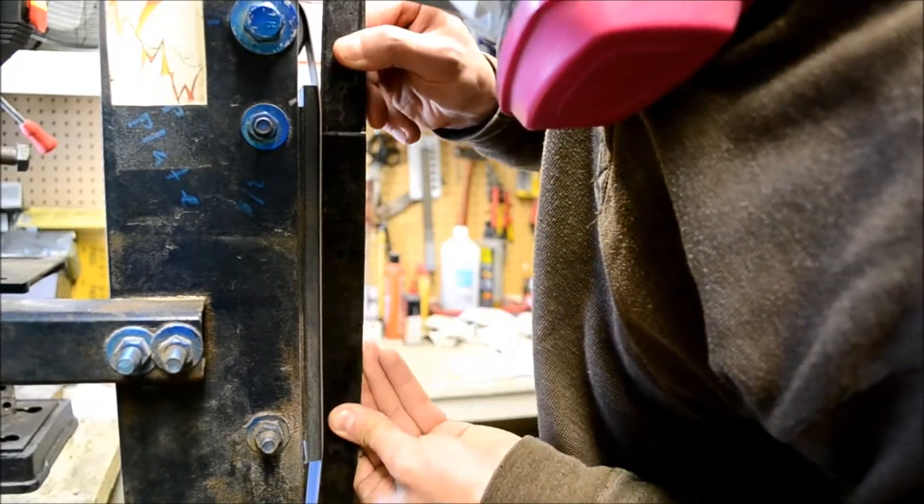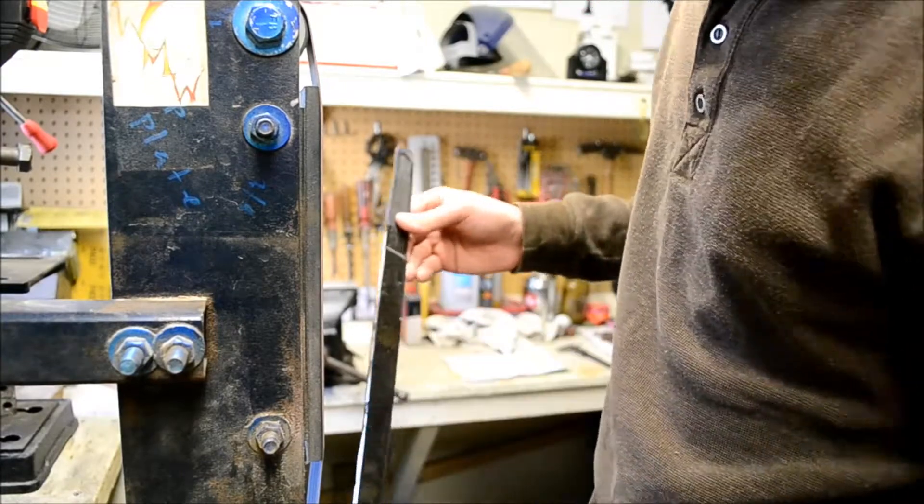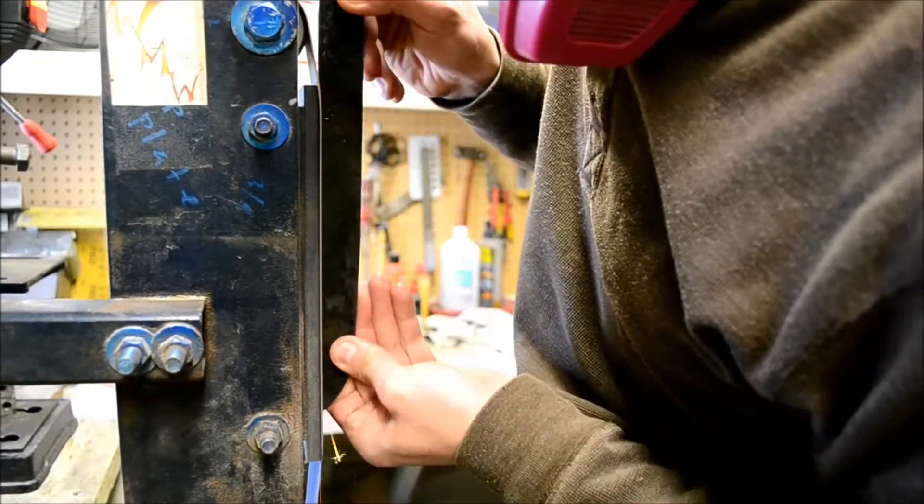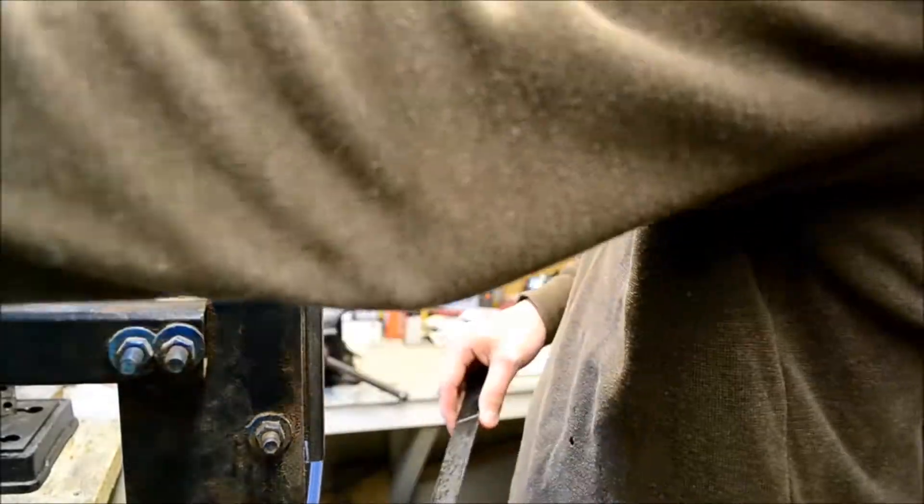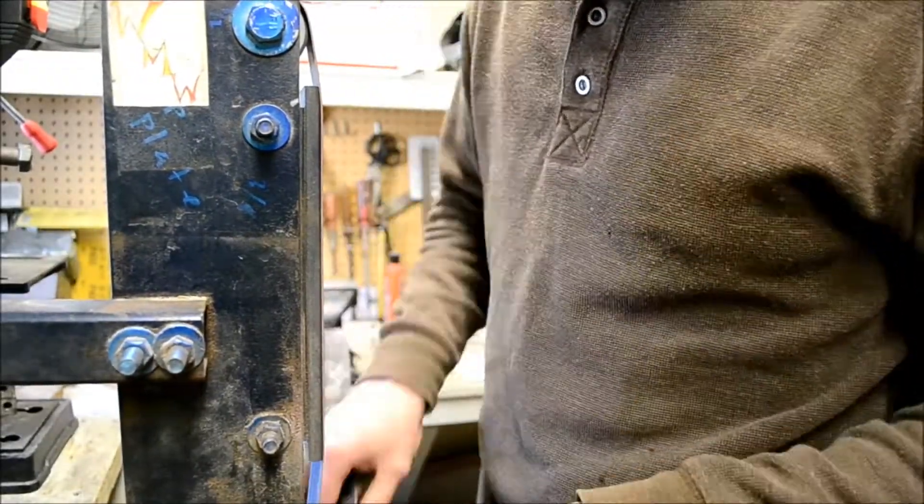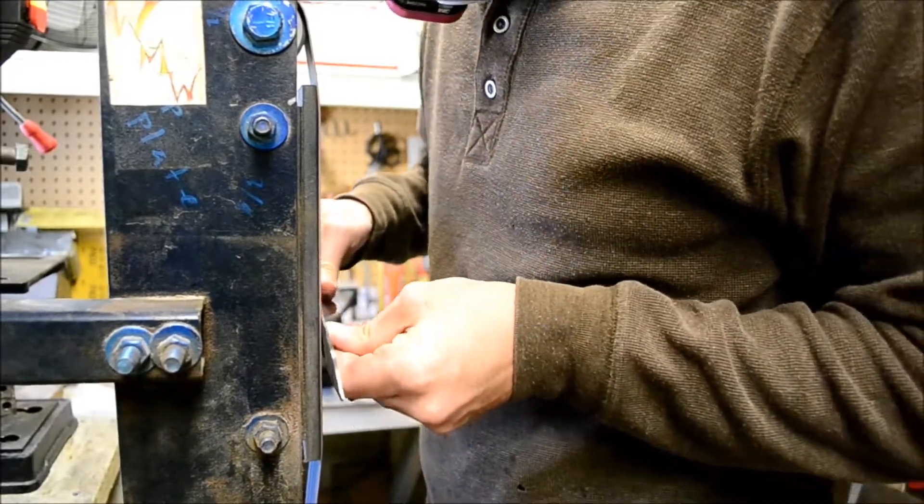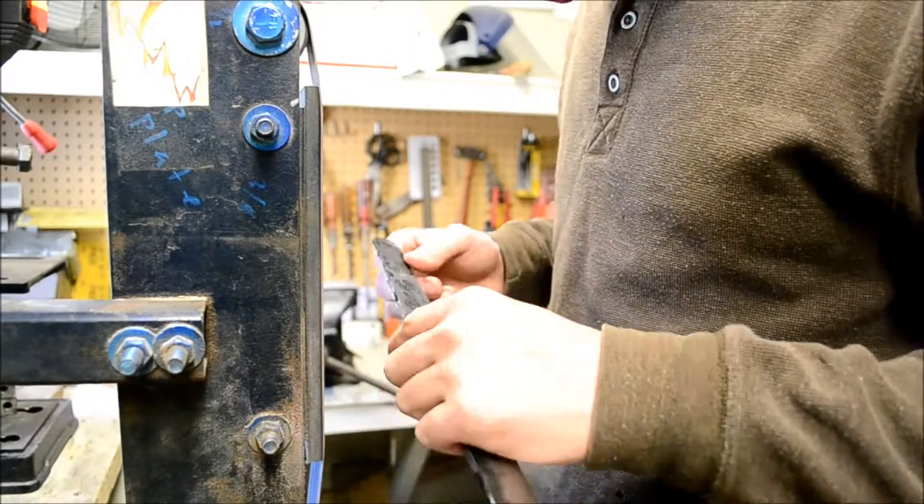In this episode, I'm profiling the tanto. I'm grinding the spine of the blade right now to make sure it's completely straight, and then I'll move on to the bevels. I'll grind it down to about a sixteenth of an inch in preparation for heat treat.